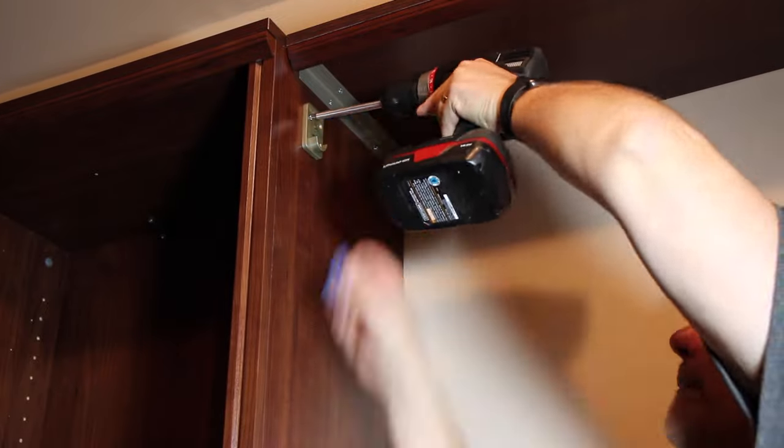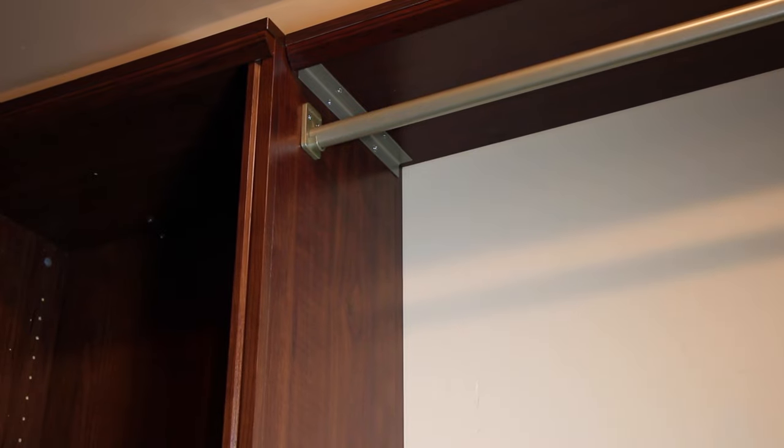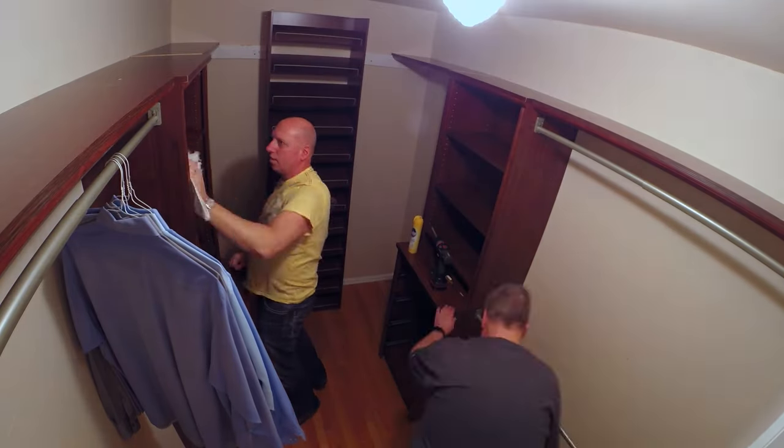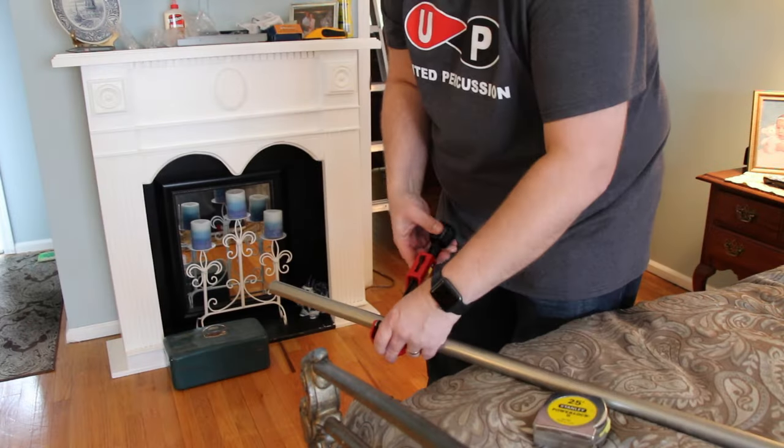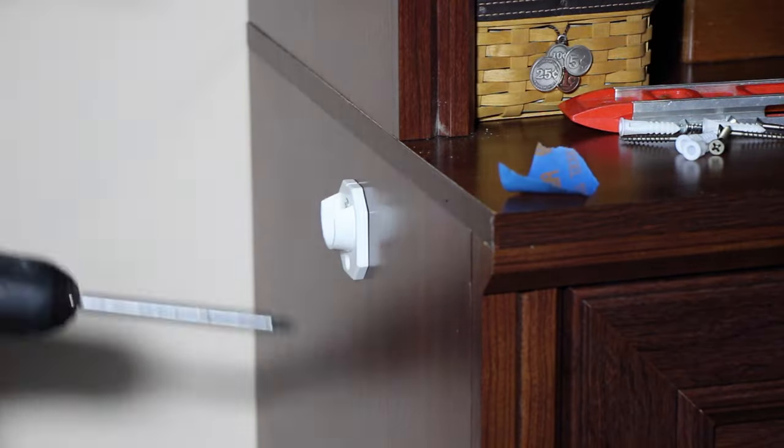I used painter's tape to mark where the bar hangers would go, because pencil marks would be too hard to see on this dark wood. Each kit came with three adjustable bars, but we bought one extra for Joe's side of the closet that needed to be cut to length with a tubing cutter.